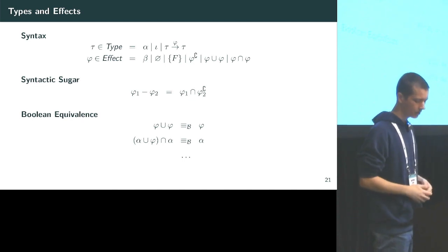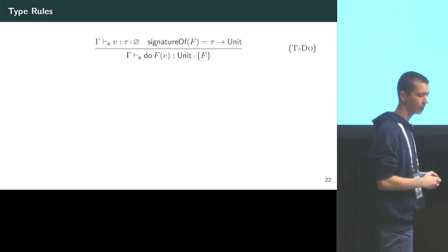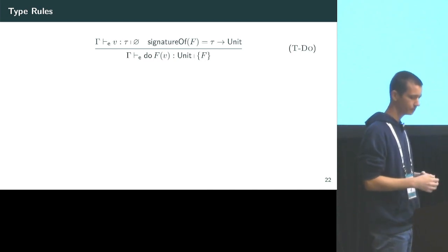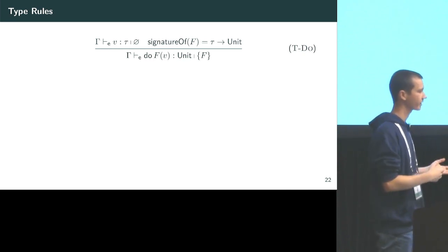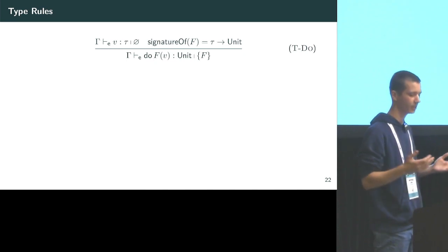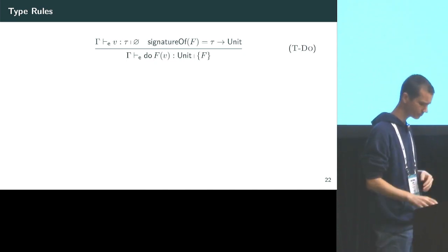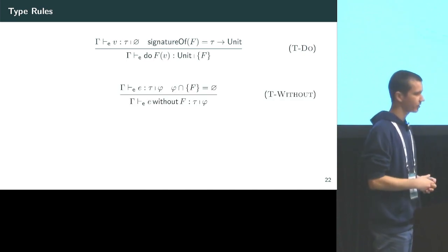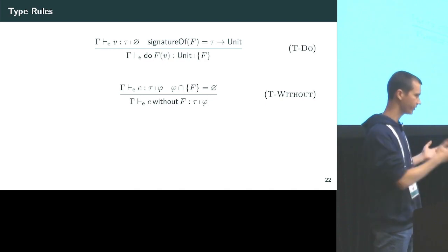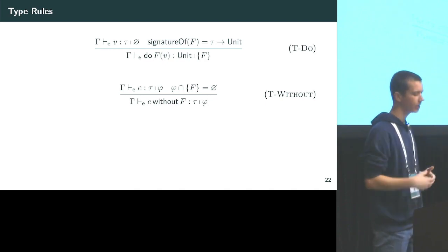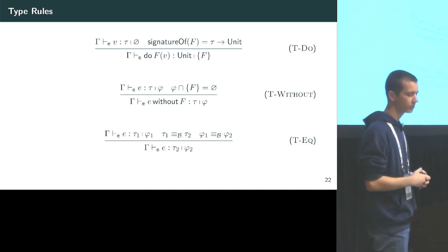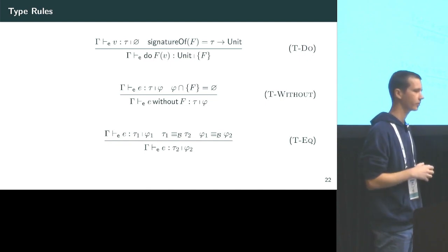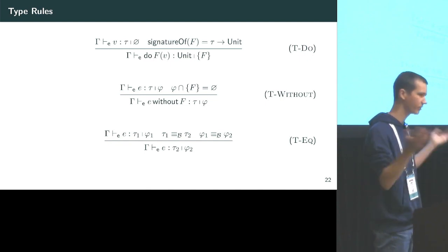We have syntactic sugar for subtraction. We also have boolean equivalence: since any set formula can be expressed in infinitely many ways, we have an equivalence notion saying that all these ways of expressing the same set are indeed equivalent. The type rule for 'do' is straightforward: when executing effect f, the inferred effect for that expression is the singleton set containing f. The 'without' rule infers the effect of sub-expression e and requires that it lack the effect f being forbidden.